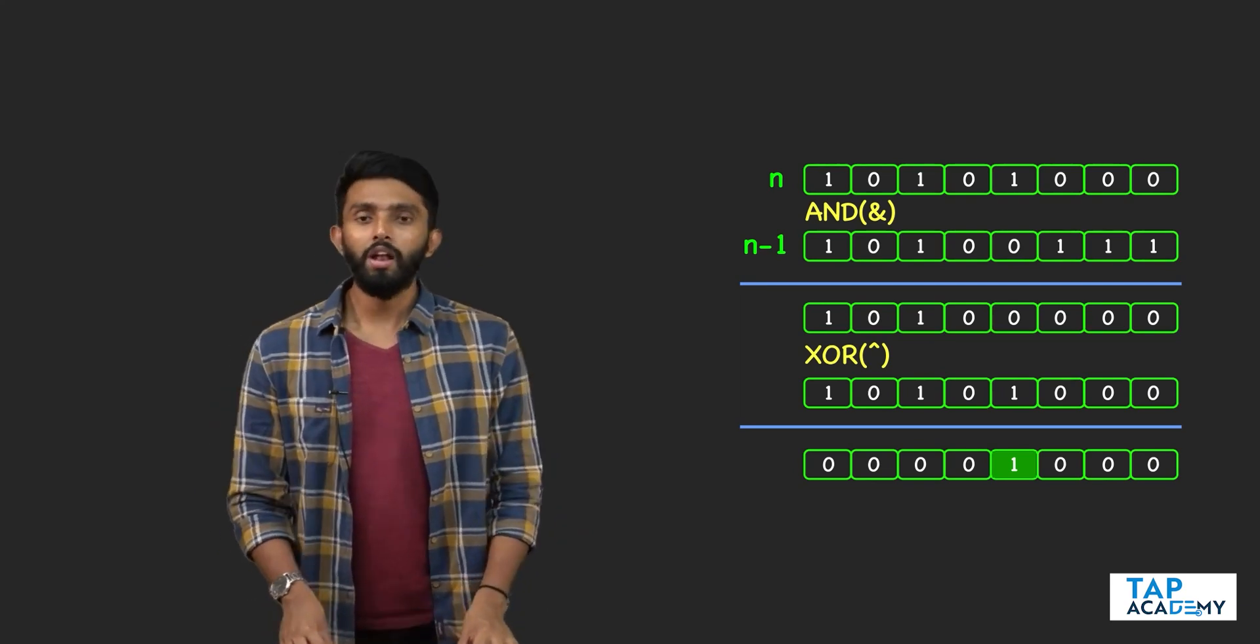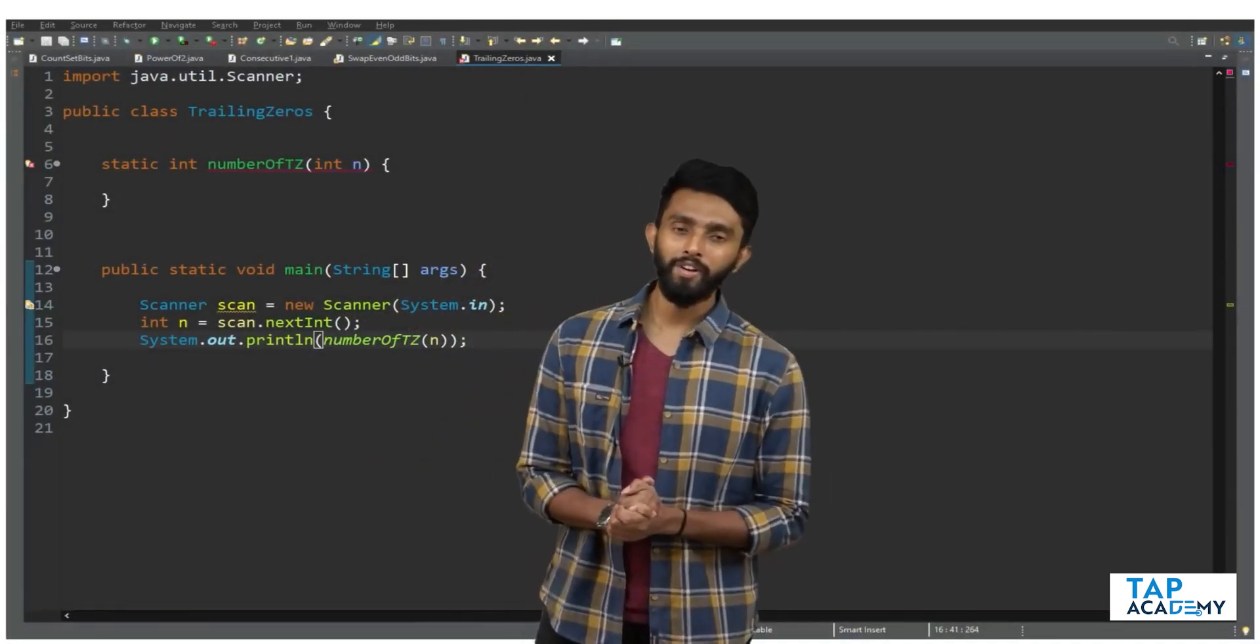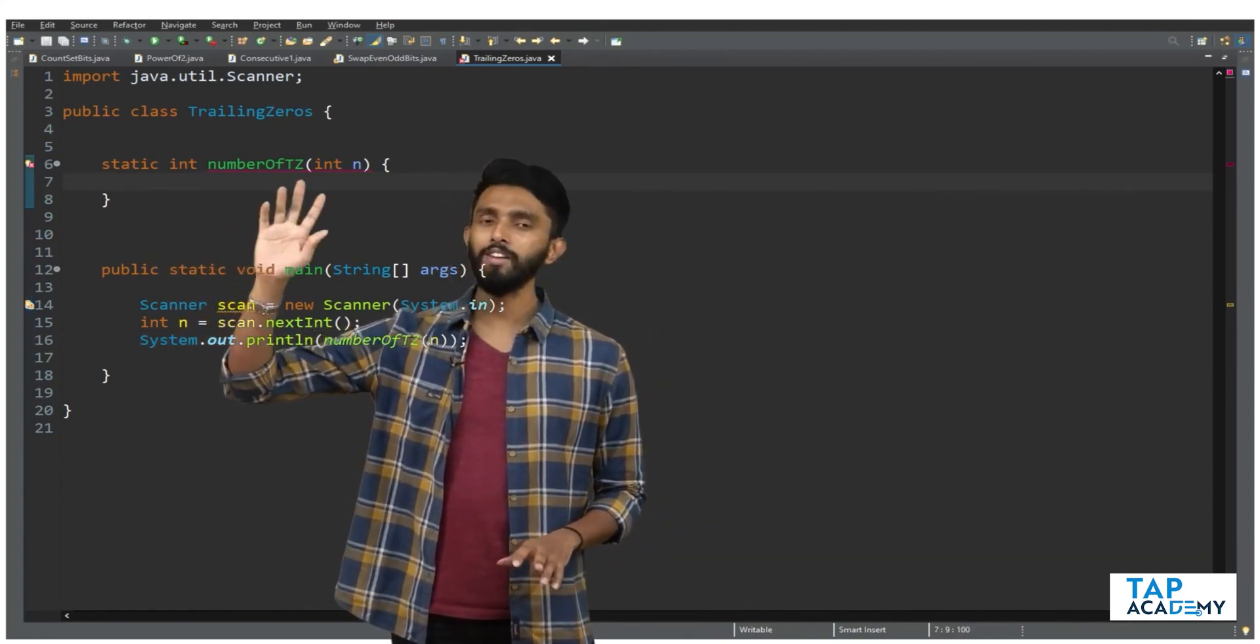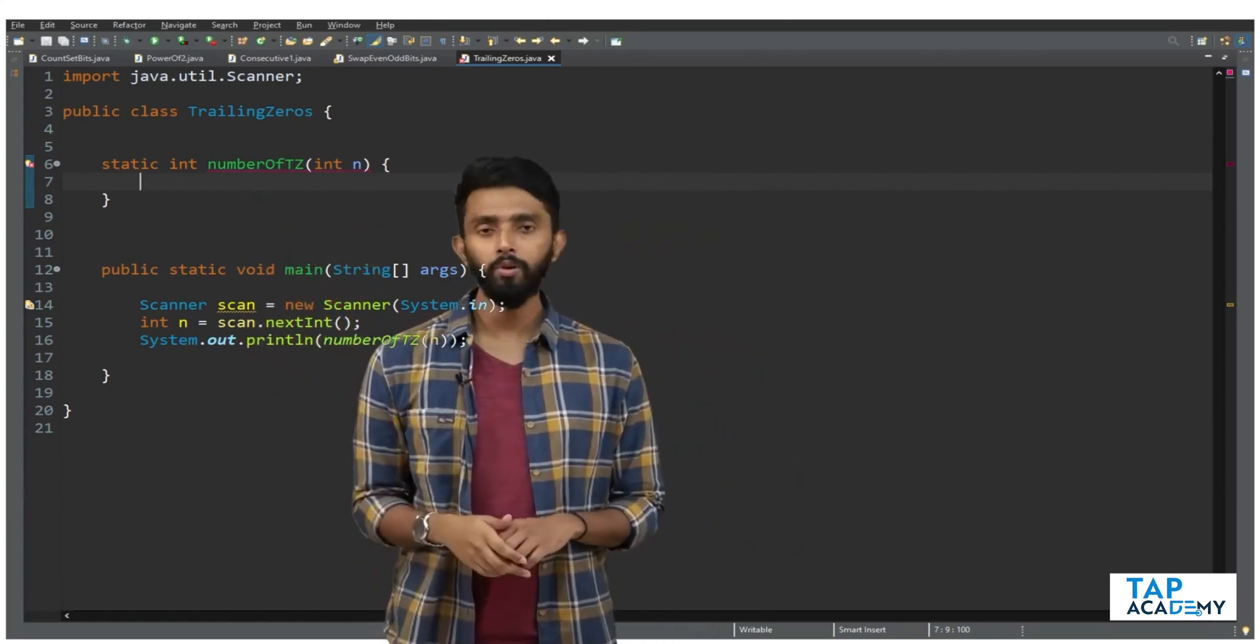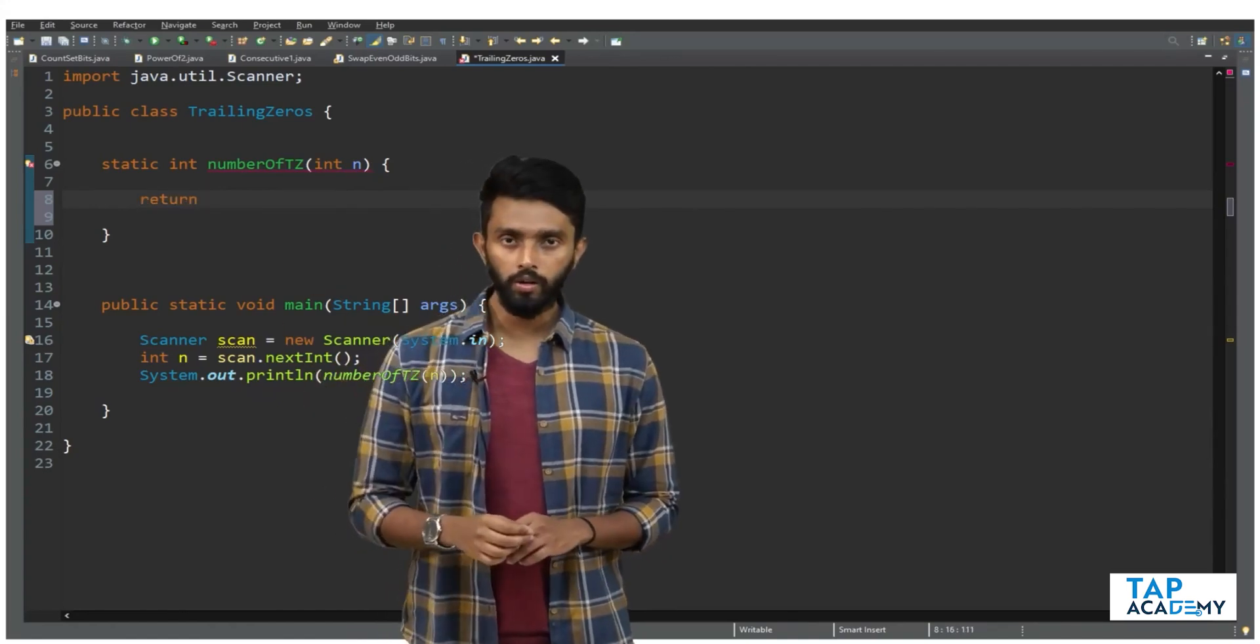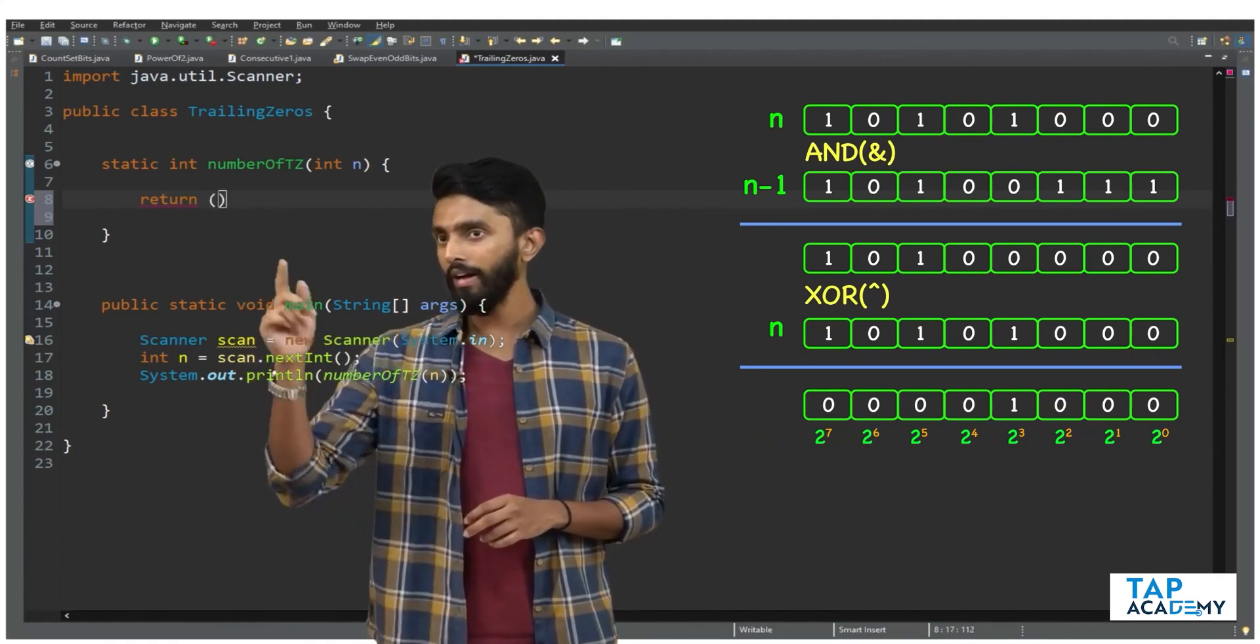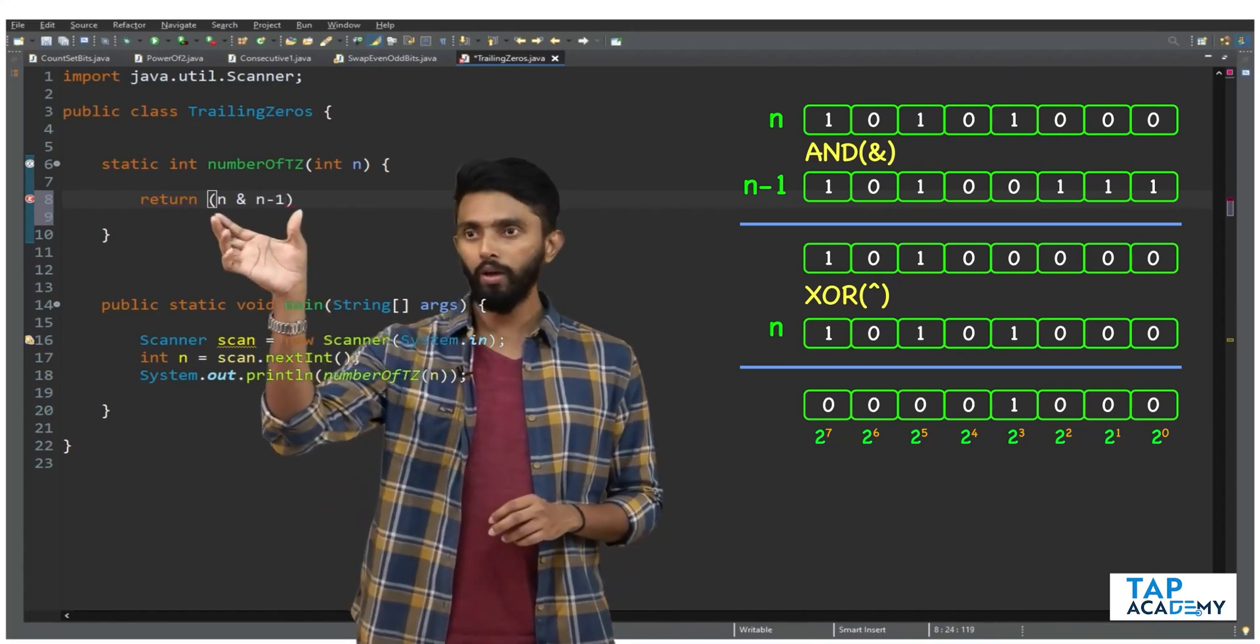Now let's write the code. Very simple. I have a static function which returns an integer called numberOfTZ, TZ means trailing zeros. It accepts an integer variable n. I'll just return the operation directly. First, do n AND n minus 1.